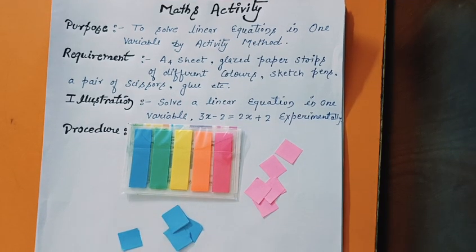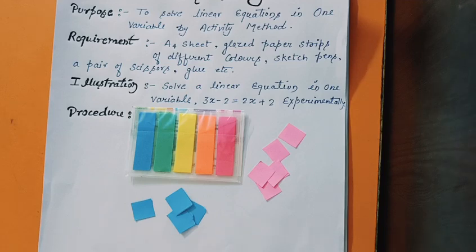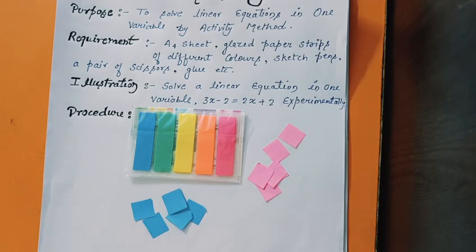Suppose here this blue square strips take as negative and this pink take as positive.